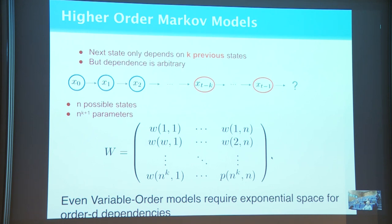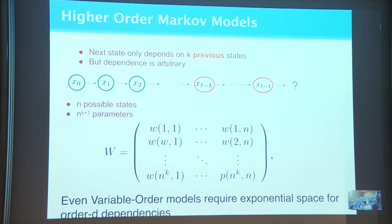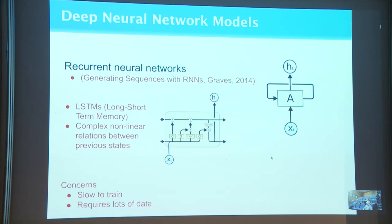In a k-th order Markov process, we're allowed to look at the last k states, and based on the k previous characters the process determines the distribution over the next state. The parameter space blows up exponentially as a function of k. People often instead use variable-order Markov processes, which use a first-order process in many situations but keep two elements of history when further data is available. Nonetheless, if you're tracking an order-d dependency, you require space exponential in d, even in the variable-order model.